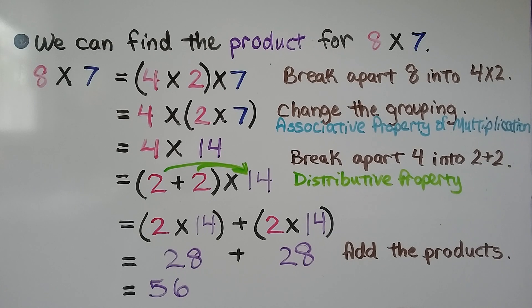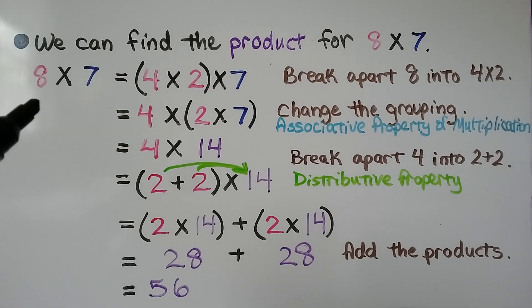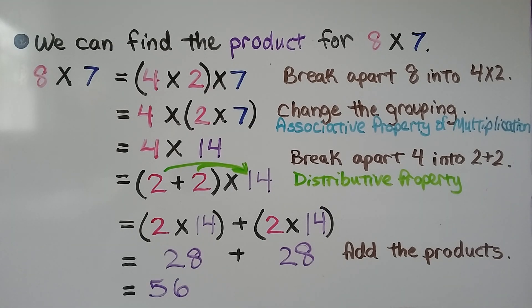So we used the associative property of multiplication and the distributive property to help us find the product of some larger factors. Let's try that again.